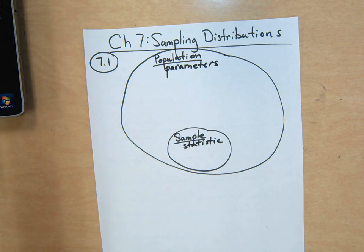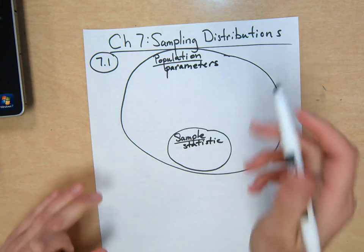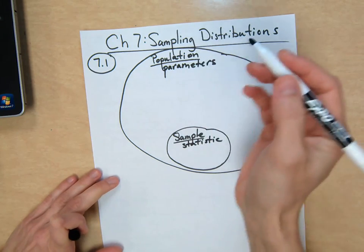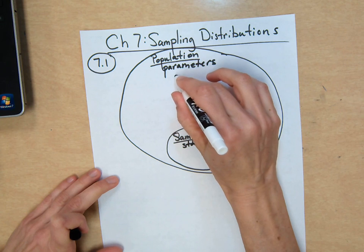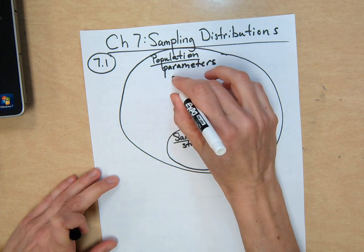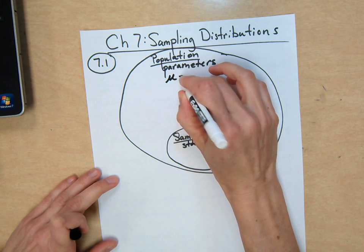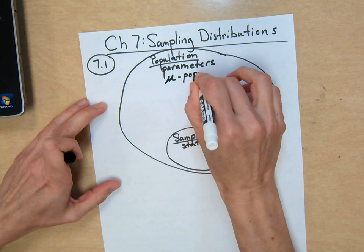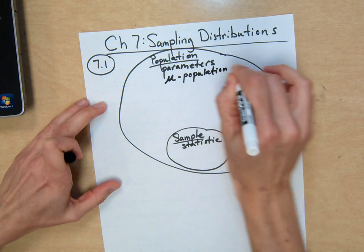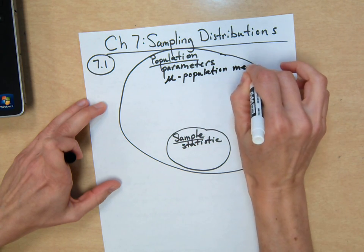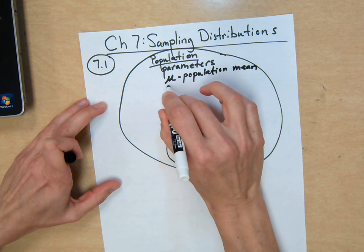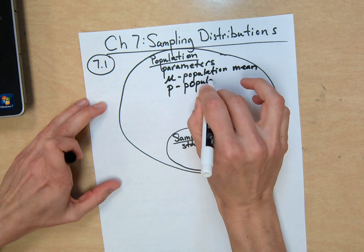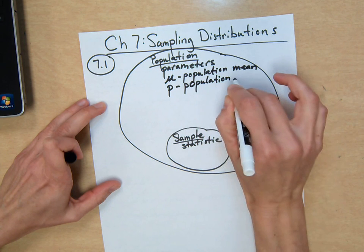And then there are two pieces of information that we're usually the most interested in, and they divide up the next two sections of this chapter. One is the mean. So when you're talking about the population mean, you use mu. Mu is the symbol for the population mean. And P is the symbol for population proportion.